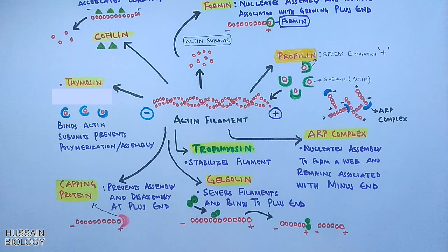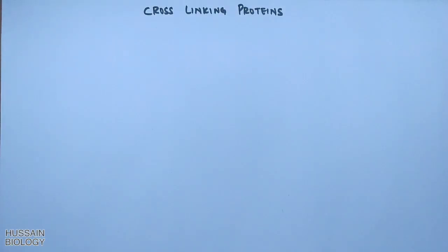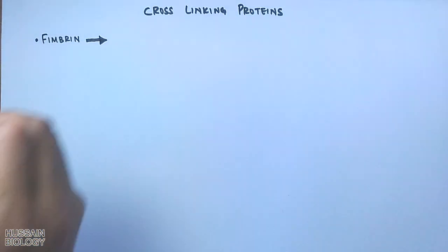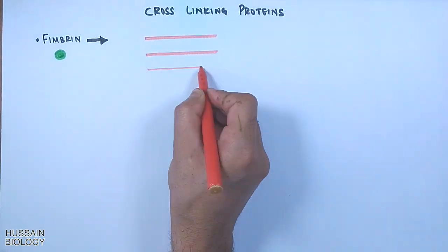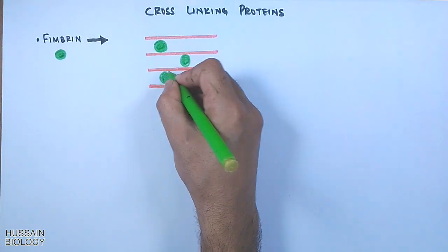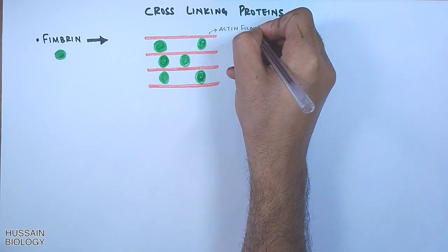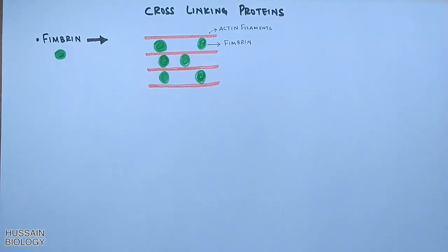Those are the important actin binding proteins. Now there are also cross-linking proteins for actin filaments. The first is fimbrin protein, which has a globular shape. In this diagram we can see the actin filaments and the fimbrin proteins in between the filaments linking them together. Fimbrin promotes the bundling of actin filaments into tightly knit parallel arrays, as shown in the diagram.